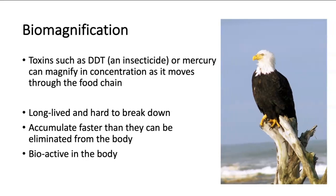The last thing you need to know for the exam is biomagnification, which we talked about in reference to DDT. DDT is an insecticide; mercury is another compound that biomagnifies frequently. As you go up a food chain from producer to consumer to consumer and so on, the amount of toxin within the organisms at those levels increases because it's building up within their bodies. These toxins must be long-lived and difficult to break down within the environment and organism, and they accumulate faster than they can be eliminated. So if an eagle takes in three units per day but can only eliminate one, two units carry through to the next day and build up over time.